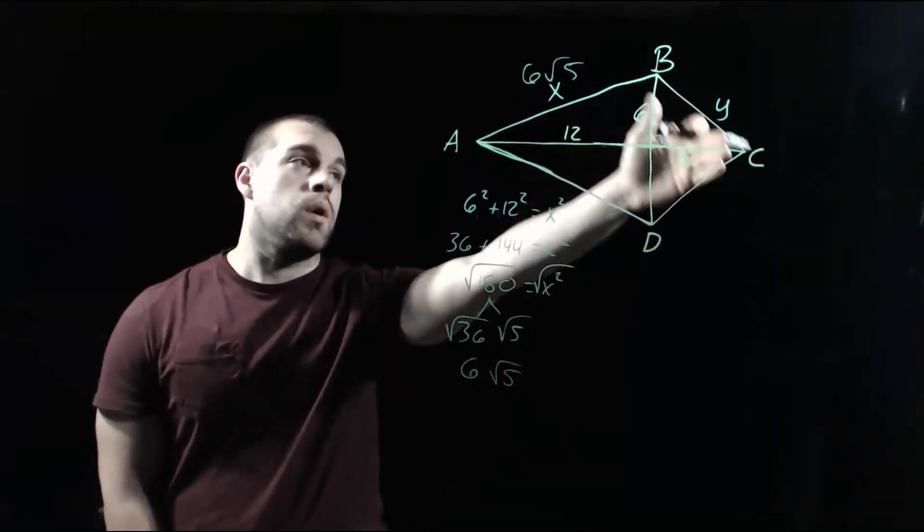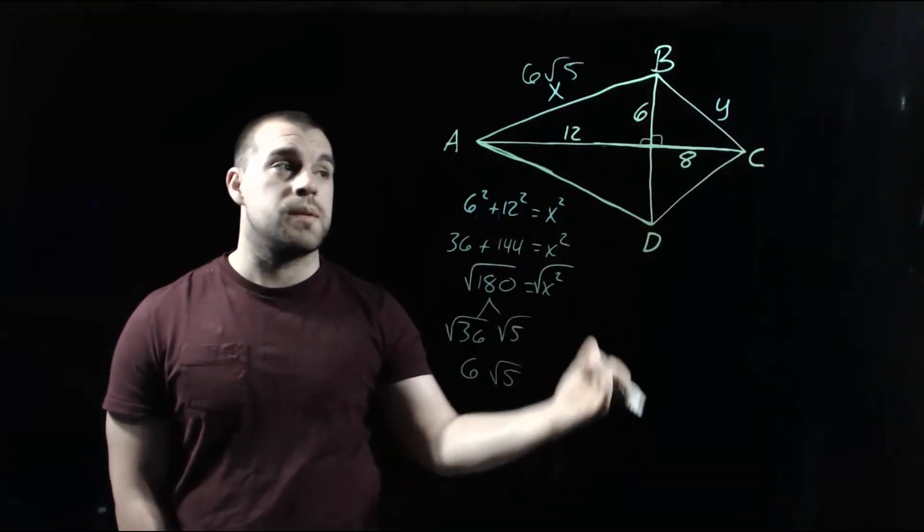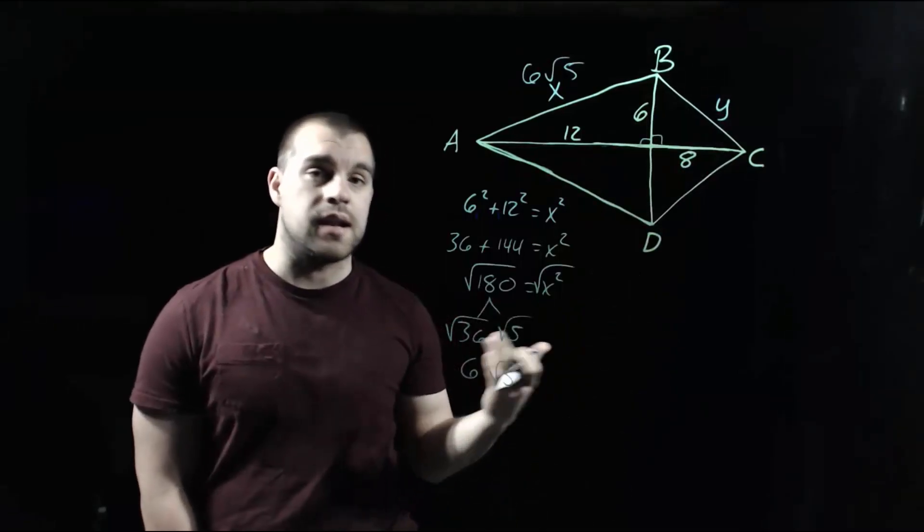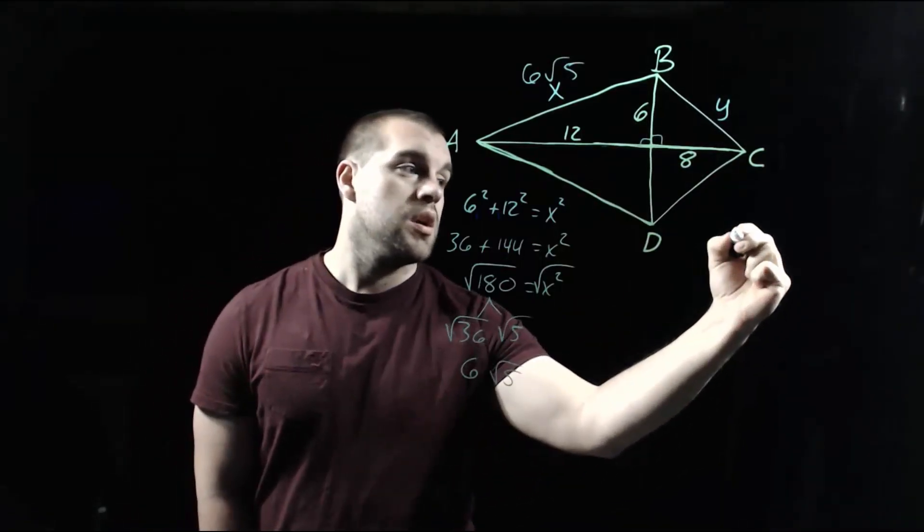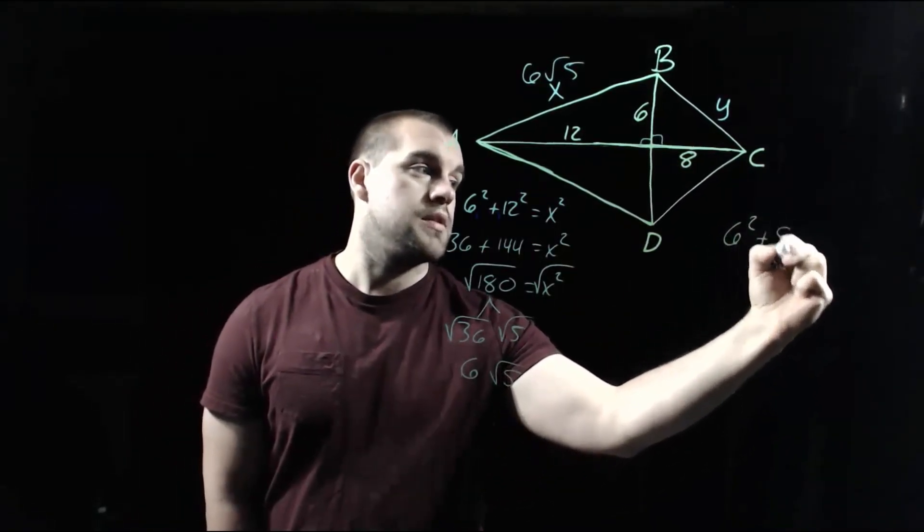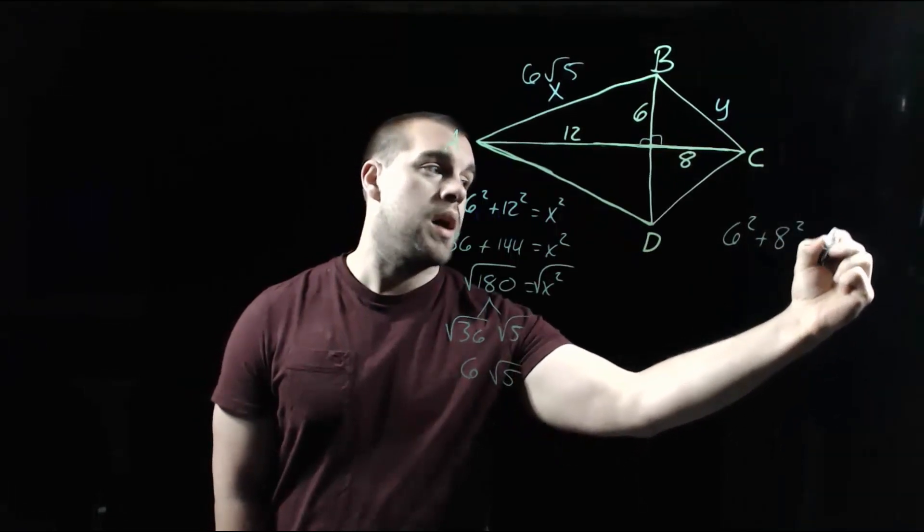Now, taking a look at that other one from B to C, again, we're going to use the Pythagorean theorem. Since the y is across from the 90, that's going to be our c value this time. So we're going to go 6 squared plus 8 squared equals our y squared.